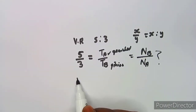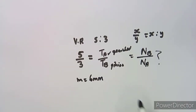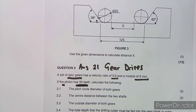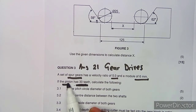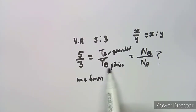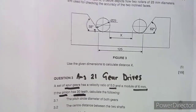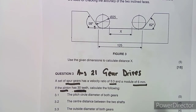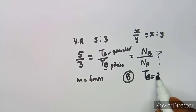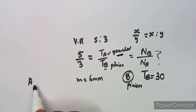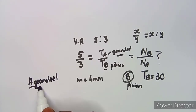The module given here is 6 millimeters, and the pinion has 30 teeth. The pinion is always the smaller gear, so we'll use it as B so that it doesn't confuse us. The pinion is B, so the number of teeth for the pinion — Tb — is equal to 30 teeth. That means A is going to be the gear wheel, so we don't interchange these formulas.